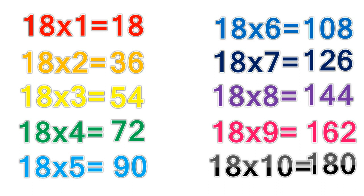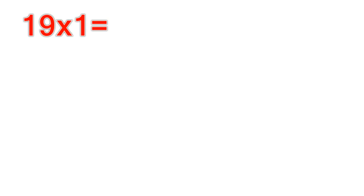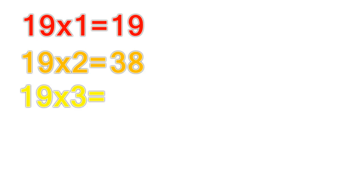19 times table. 19 times 1 equals 19. 19 times 2 equals 38. 19 times 3 equals 57.